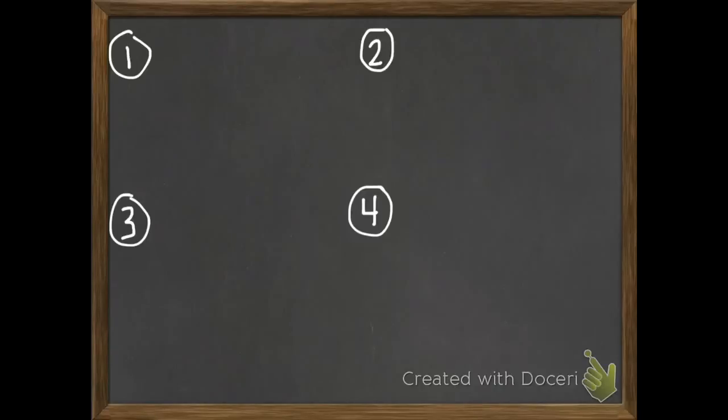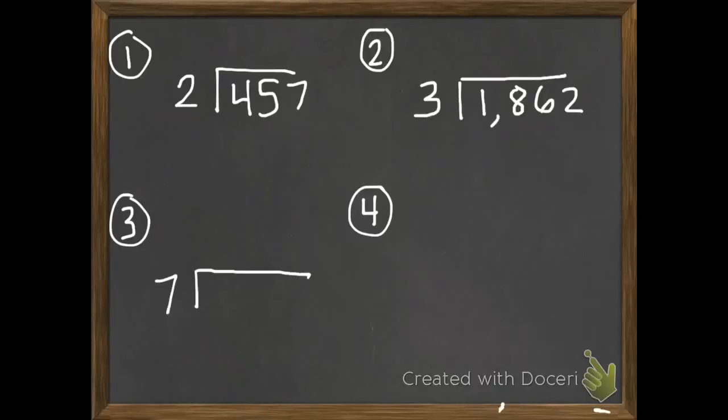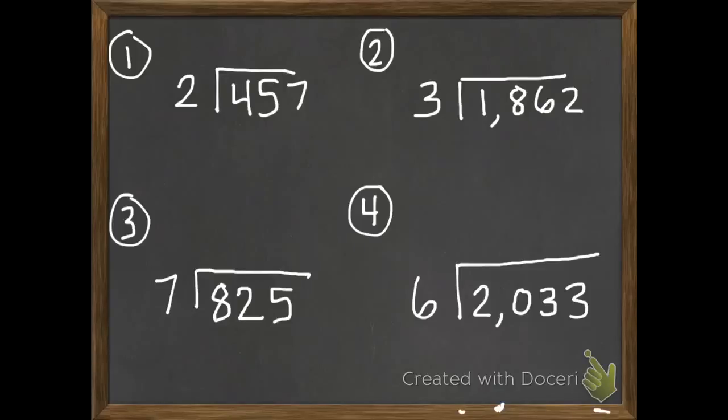If you got them right, we've got four more problems for you to do. These four problems, I'm not going to go through and show you the answers. We're going to correct them tomorrow in class. So the first problem is 457 divided by 2. Second problem is 1,862 divided by 3. Third, 825 divided by 7. And number 4, 2,033 divided by 6. Bring this to class tomorrow and we'll see how you did.